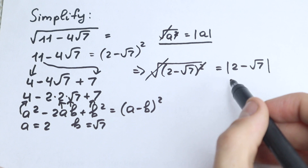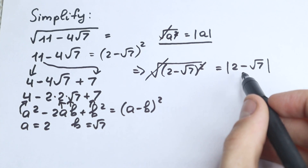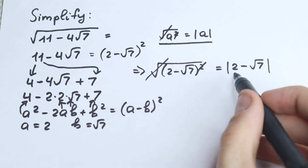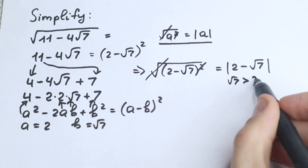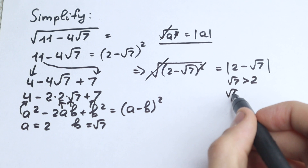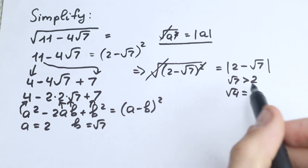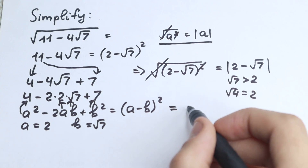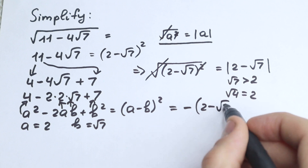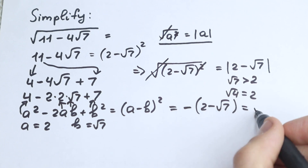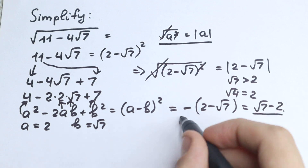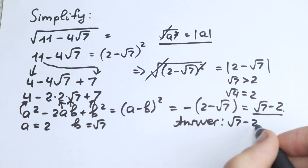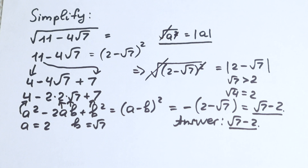Now let's simplify the absolute value. We know that square root of 7 is greater than 2, because square root of 4 equals 2 and square root of 7 is greater than square root of 4. So the expression inside the absolute value is negative, meaning we put a minus sign in front: minus (2 minus square root of 7), which equals square root of 7 minus 2. That is our final answer.